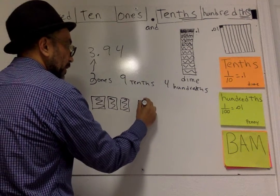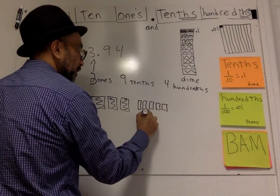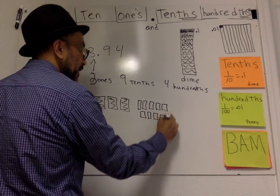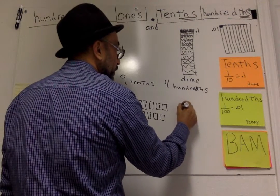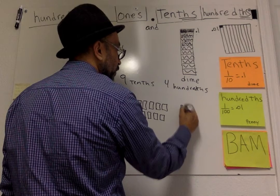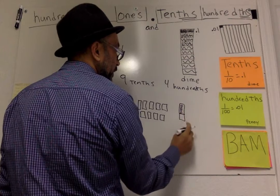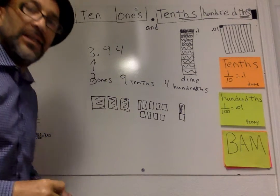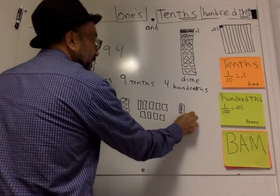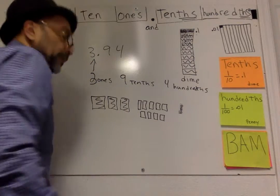Nine tenths. One, two, three, four, five, six, seven, eight, nine, and four hundredths. One, two, three, four. Notice it's not even one tenth. It's only four of those, four pennies out of a dime, right? So I won't even draw that. Just four little cubes. All right. You got it?